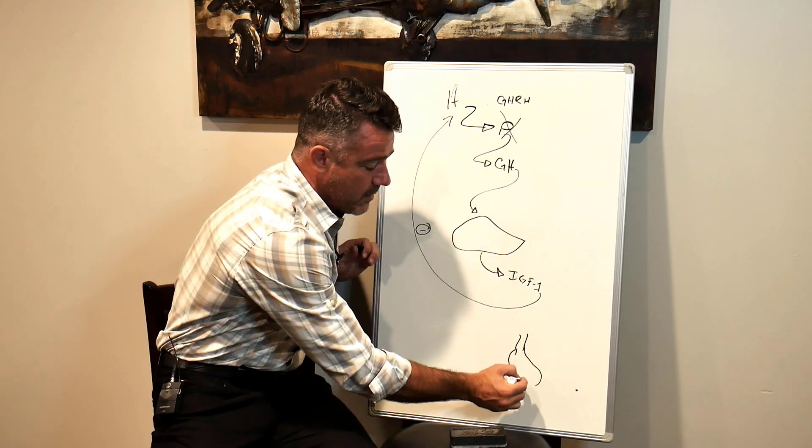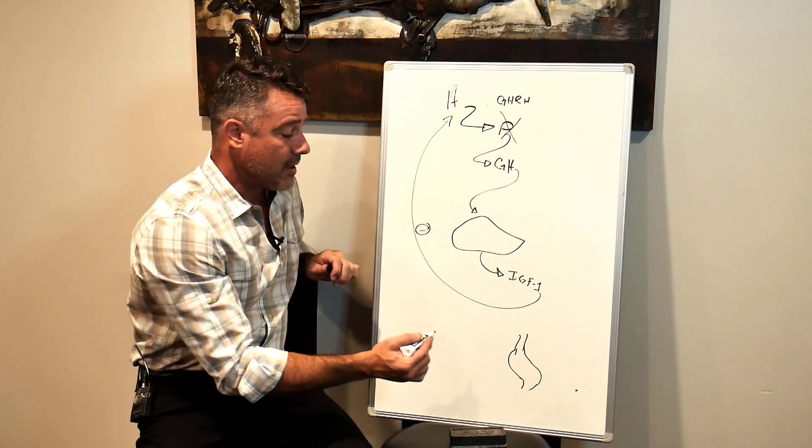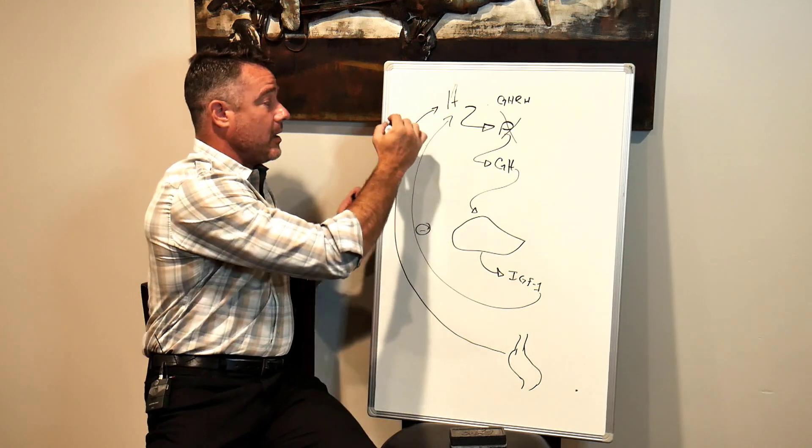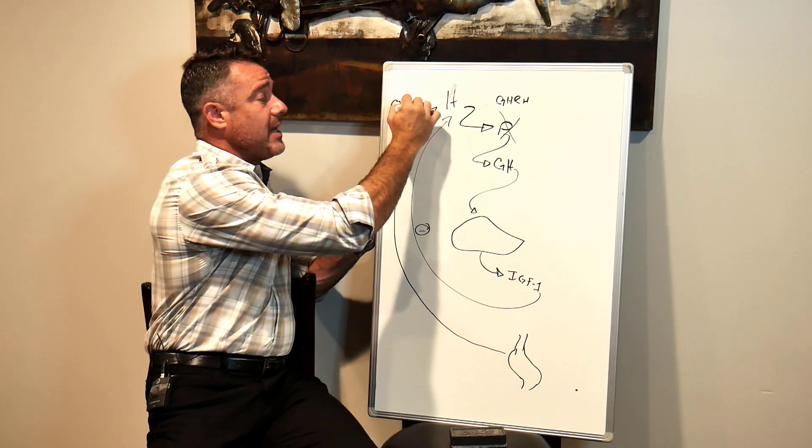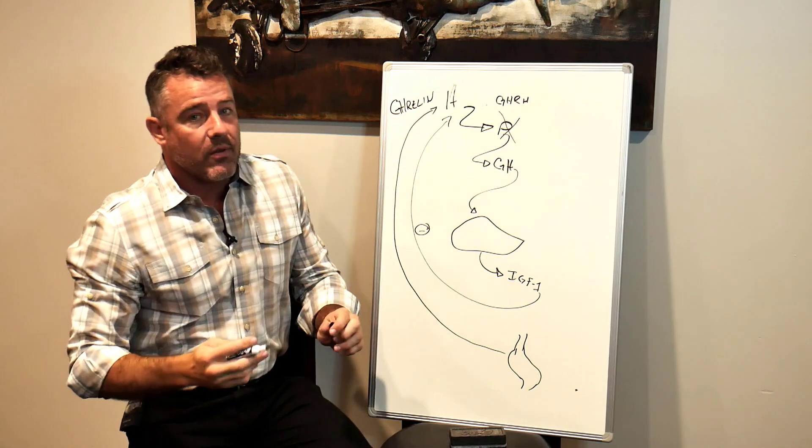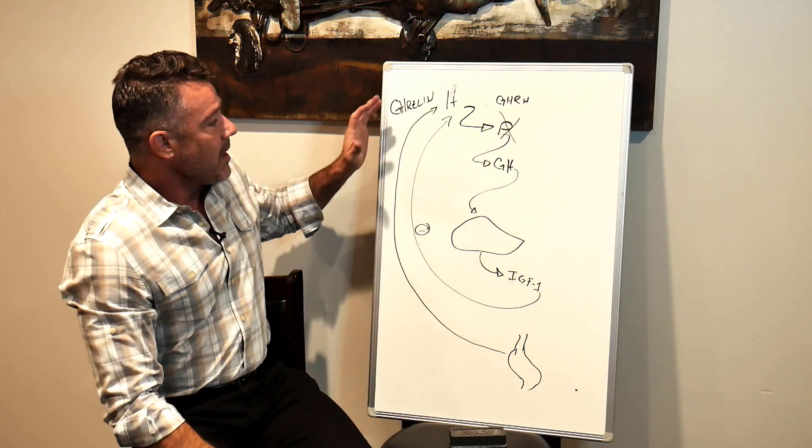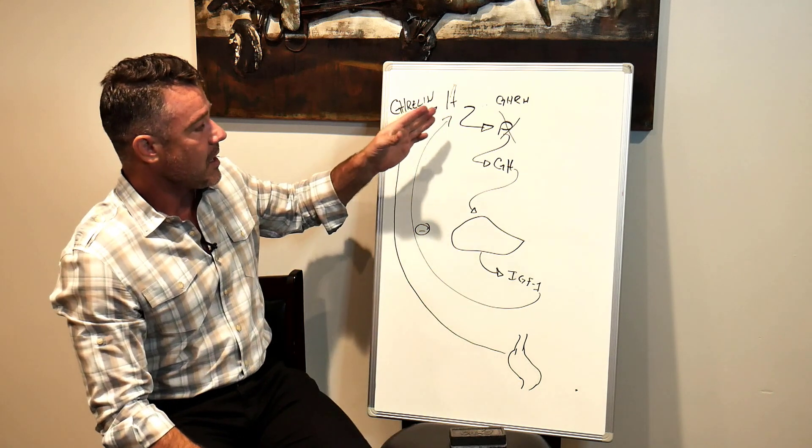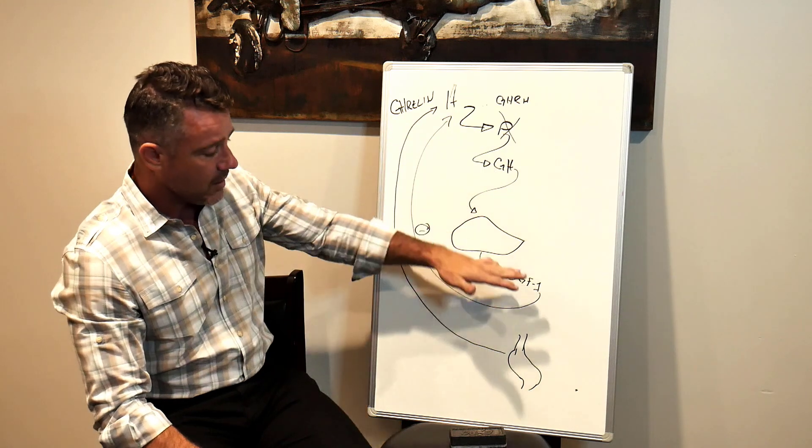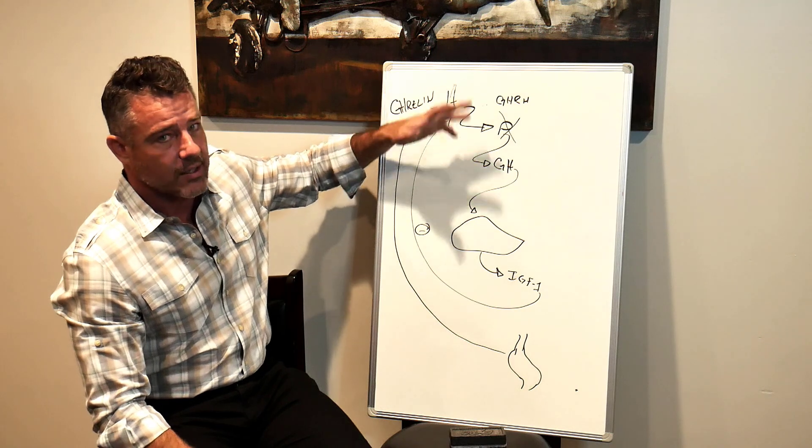So this is a very poorly drawn stomach, but in the stomach, there are these cells called X cells. They produce a hunger hormone called ghrelin, G-H-R-E-L-I-N. The way to remember that: if your stomach is ghrelin, it's because of ghrelin. It does the same thing. It increases production of growth hormone, but same thing. It gets down to IGF-1. IGF-1 gets in the bloodstream, makes it back up, shuts down production.